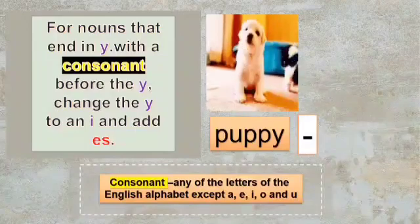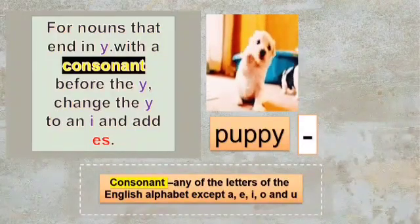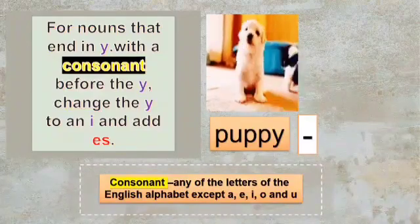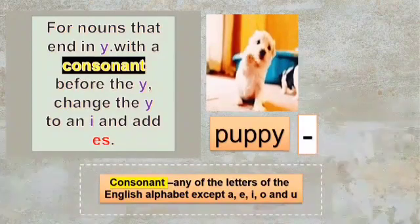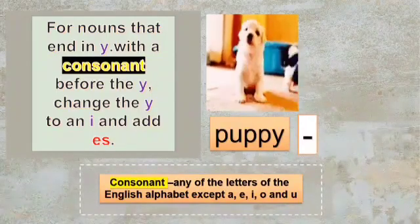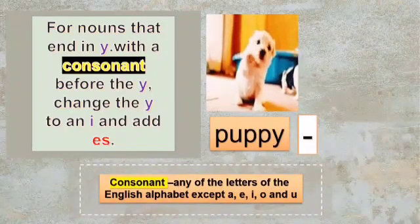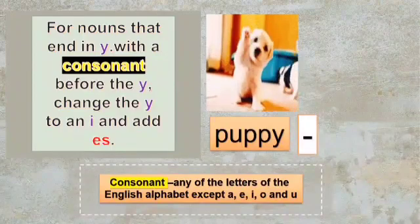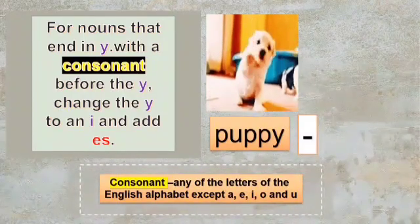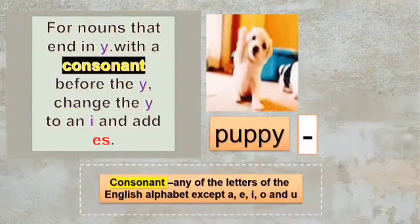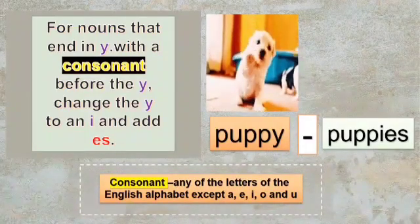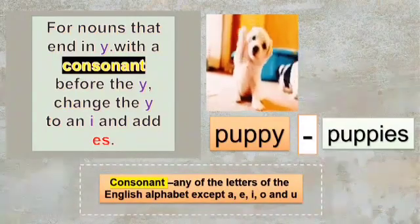Rule 4: nouns that end in Y with a consonant before the Y — change the Y to I and add ES. Consonants are all letters except A, E, I, O, U. So if a consonant comes before Y, we remove Y and add I, then write ES at the end. For example, puppy — I have removed Y, placed I, and added ES to make it plural: puppy becomes puppies.